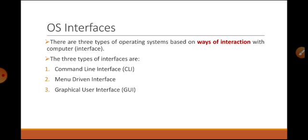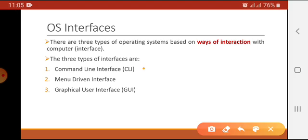Operating systems have different interfaces — ways we can interact with the computer. There are three types of interfaces of operating systems: command line interface (CLI), menu driven interface, and the most commonly used, graphical user interface, short for GUI. Simply put, the interface is the screen we see on the computer and how we interact with it using that screen.